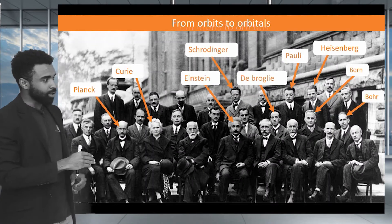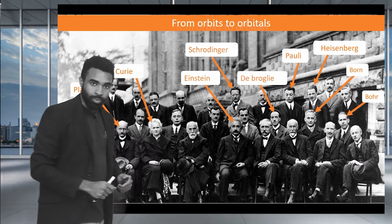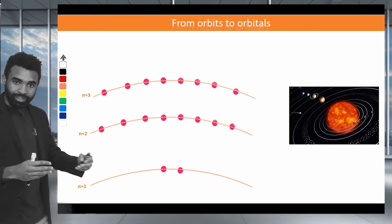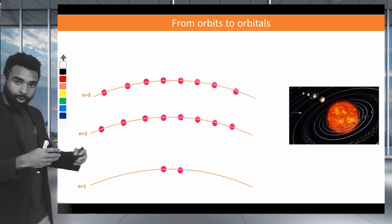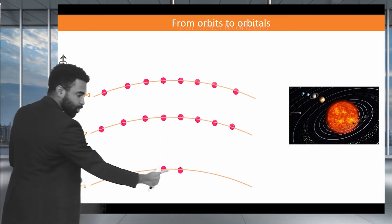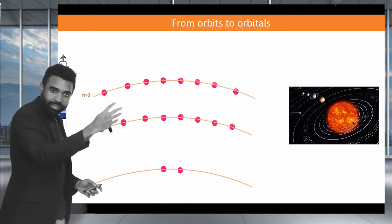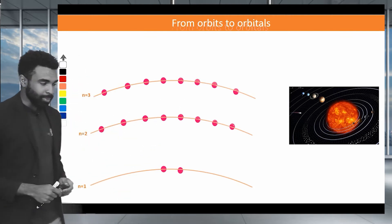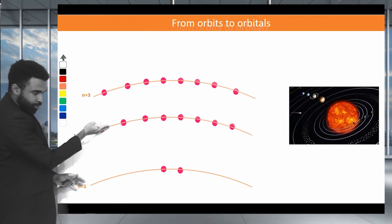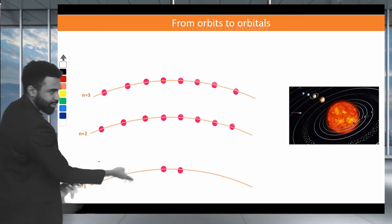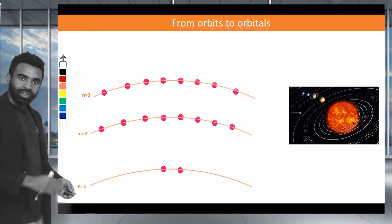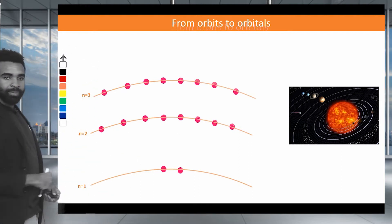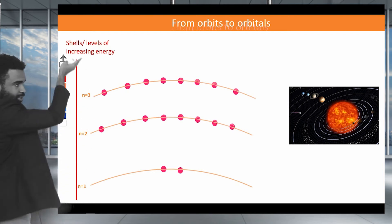In a previous video I introduced Niels Bohr, who is most famous for his orbit model of electronic structure. Bohr posited that electrons basically circled around a positive nucleus in well-defined orbits, kind of like a planetary model. As we go further and further away from the nucleus, these electrons have higher and higher potential energies — just like an object moving away from Earth gains potential energy. So we have shells of increasing energy.